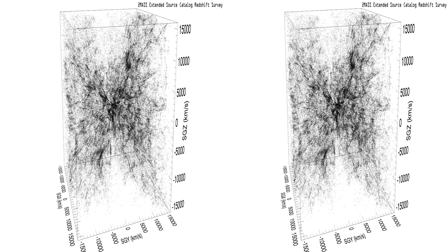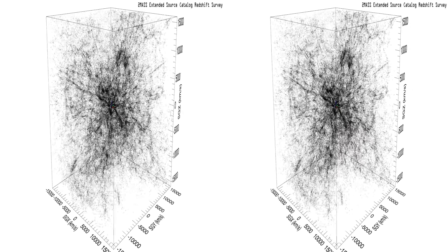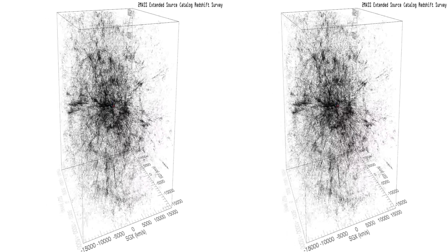Redshift space distortion causes clusters of galaxies to appear elongated towards the center of the cube.